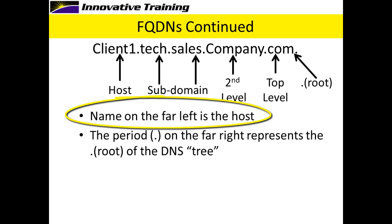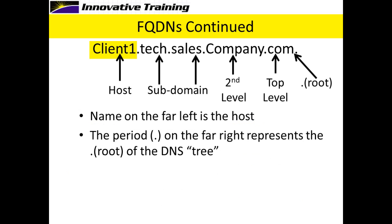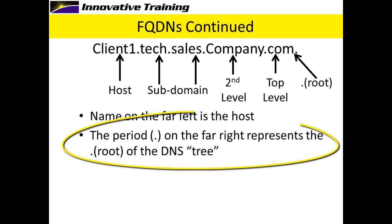The name on the far left is the actual name of the host or the computer — Client 1, something like that. Traditionally, when DNS first started out, if it was www.yahoo.com, it was a server named www in the yahoo.com domain. Not quite how we do it anymore, but that's the idea. There's an invisible period on the far right that you never have to type, which represents the root of the DNS tree.